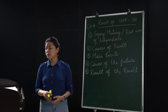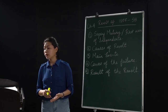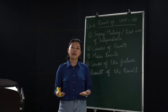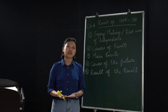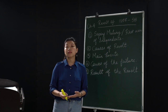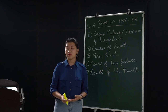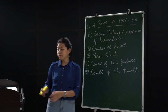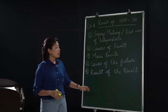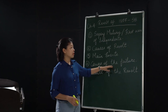The middle classes — traders and small industrialists — had a good relationship with the British. So for them, it didn't feel necessary to have a revolt. All of this led to the causes of failure, and ultimately the revolt failed very badly.